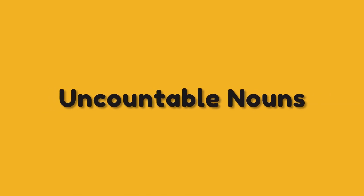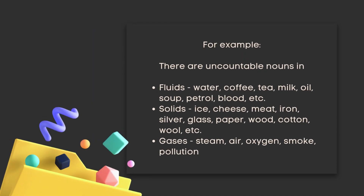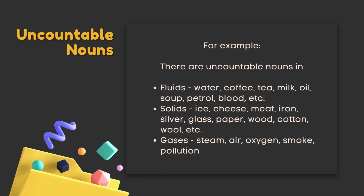Uncountable nouns are also called mass nouns — substances, concepts, etc. that we cannot count as individual elements. Note that we never use uncountable nouns with the indefinite article such as 'a' or 'an'; they are always singular. For example, fluids like water, coffee, tea, milk, oil, soup, petrol, blood, etc.